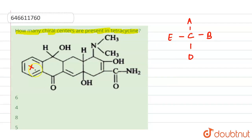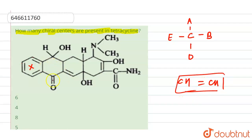In this ring, we will have no chiral carbon, no chiral center, because here we have double bonds. Where there is a double bond — for example, CH double bond CH — those carbons have hydrogens and cannot be chiral. Similarly, in this next ring, this carbon is also not a chiral carbon because it is attached by a double bond.